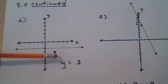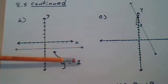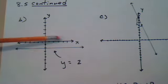So when you just have a y and no x, when you have y equal a constant, it's always going to be a horizontal line.